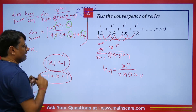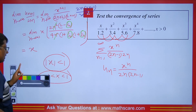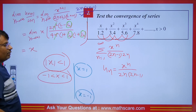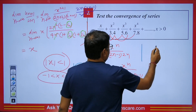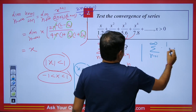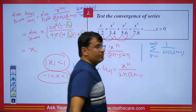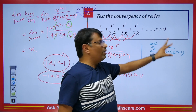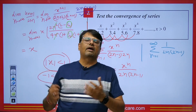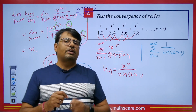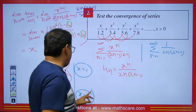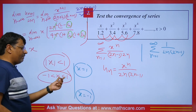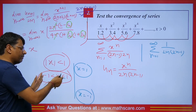At x = 1, the series becomes summation 1/(2n(2n-1)). By the comparison test with 1/n², this is a convergent series. We take v_n = 1/n² and the limit of u_n/v_n is finite, so both behave the same — it was explained in an earlier uploaded video. So the series is convergent at x = 1.